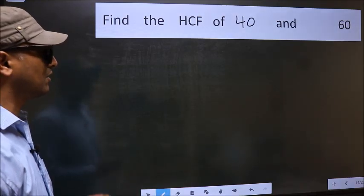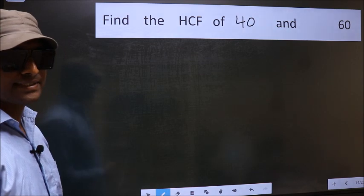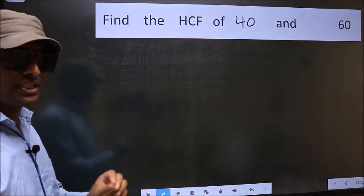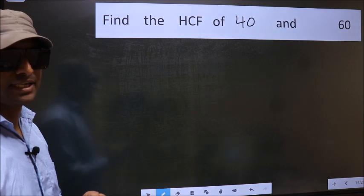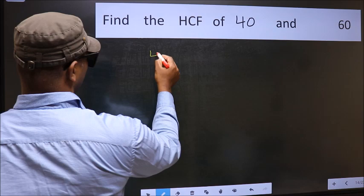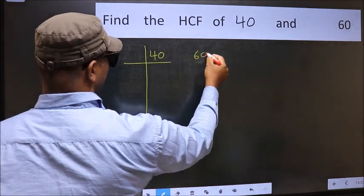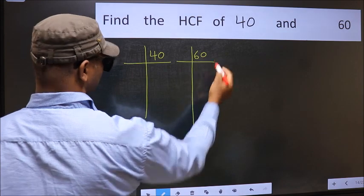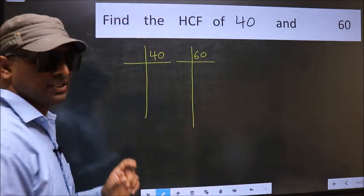Find the HCF of 40 and 60. To find the HCF, we should do the prime factorization of each number separately. What I mean is 40 and 60. This is step 1.